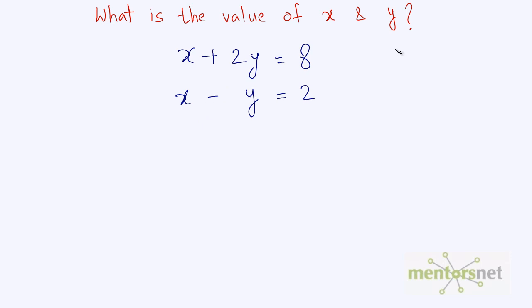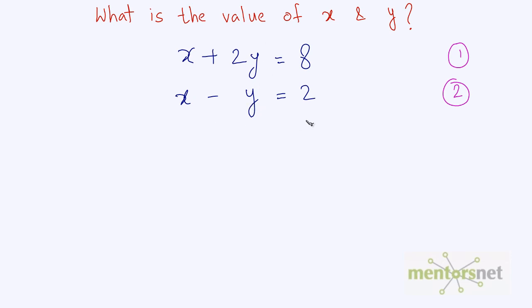The first step is to name these equations so that it is easy to keep track of what you are doing. So let's name this as equation 1 and equation 2. Now the target is to remove one of the variables so that you remain with only a single variable in the resultant equation.